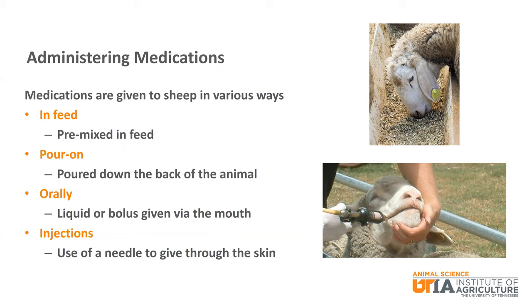Some medications are given orally. This could be a liquid that is squirted into the mouth of the sheep with a drench gun or added to the drinking water. Or it could be a bolus administered with a balling gun. There are examples that are antibiotics and dewormers among many others. Finally, medications can be given through injections. There are different types of injections, but they consist of using a needle to administer the medication through the skin directly into the animal.